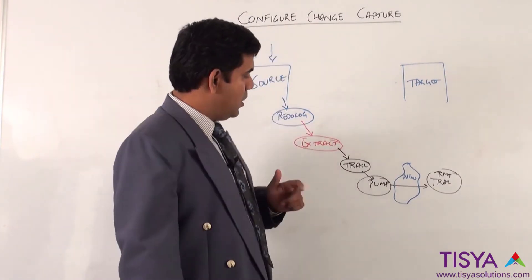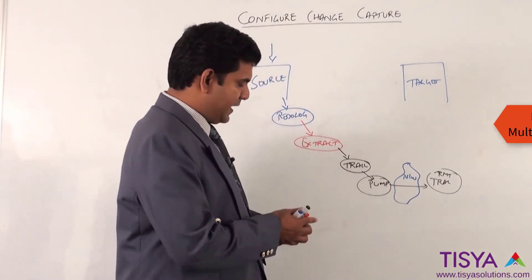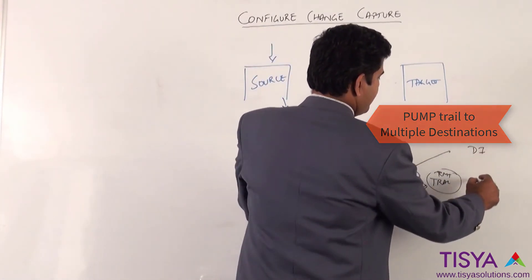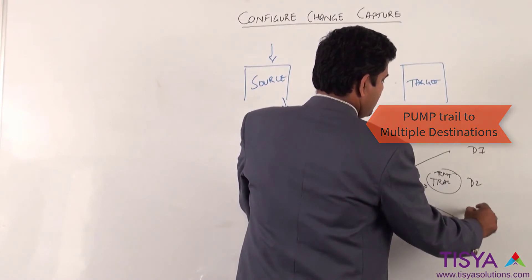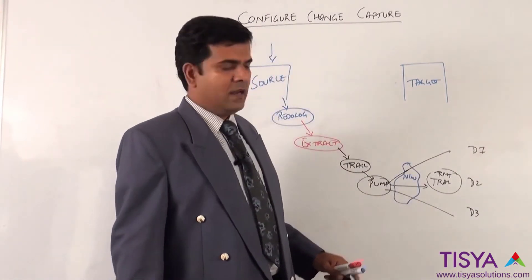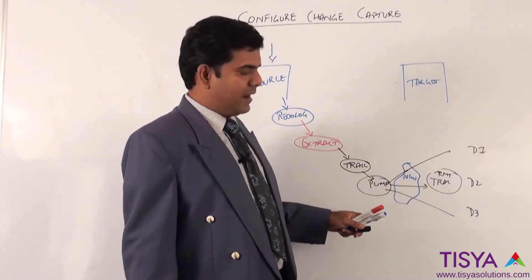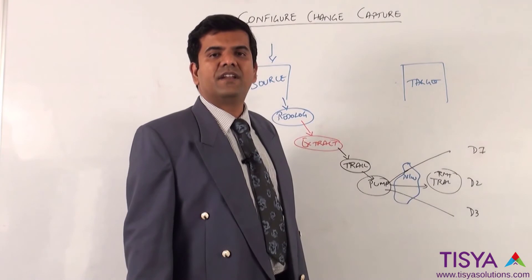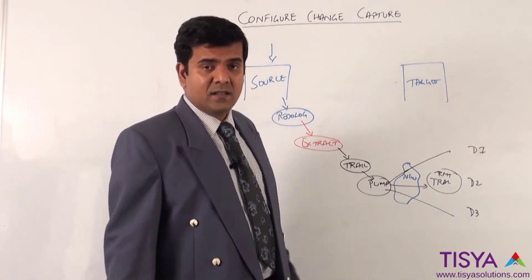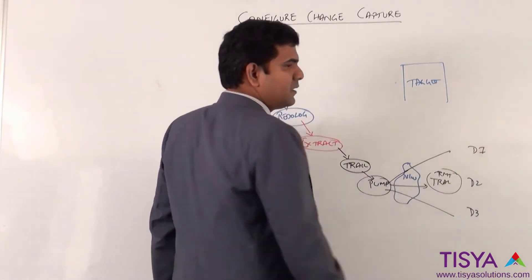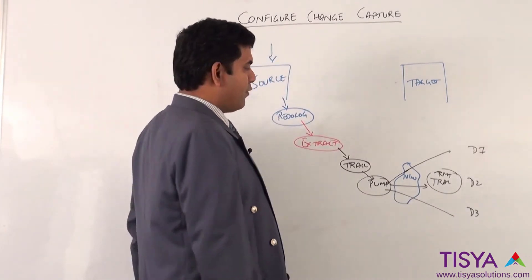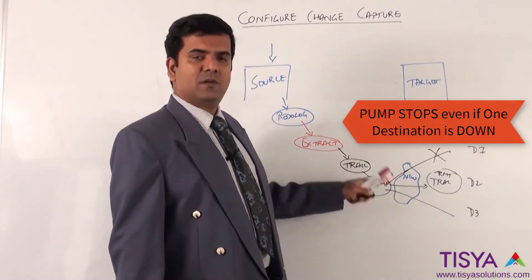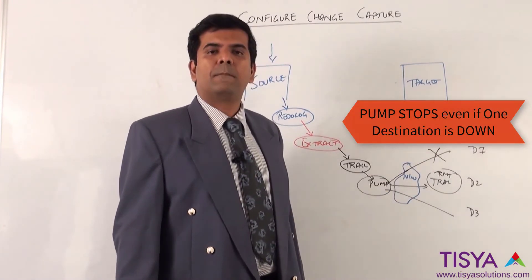Another benefit is that using one pump you can send data to multiple destinations — destination one, destination two, or destination three. The benefit is that one pump itself can send the data across to multiple destinations. However, the problem with this approach is that if one network falls down, the pump will stop entirely because it is not able to pump to that one destination.